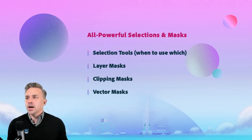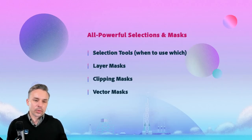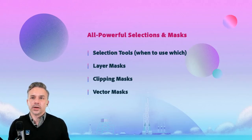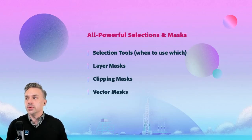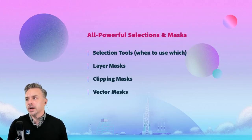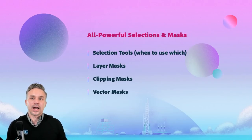So this is the plan: selection tools, when to use which one. There are plenty of different ways of doing things, but it all depends on the scenario. It's like, what's the fastest way to cut something out? I'll show you that. There are some new tools in Photoshop 2020, which is super fun to check out. Layer masks, clipping masks — pretty straightforward. Some pro tips, since this is a masterclass.